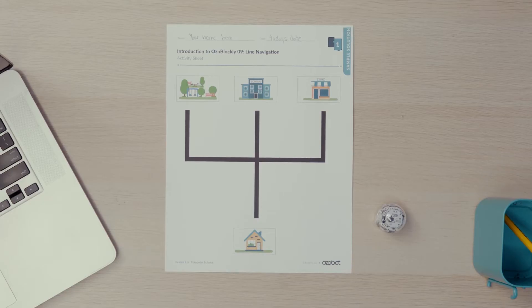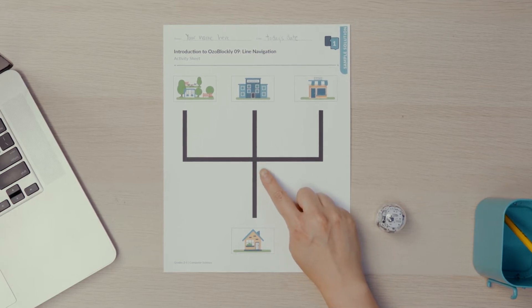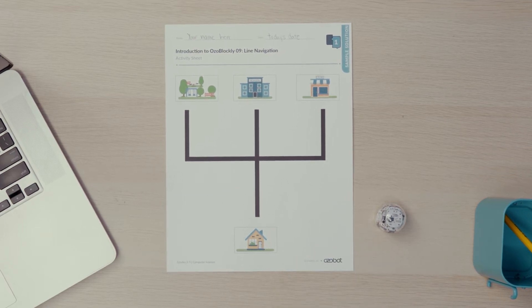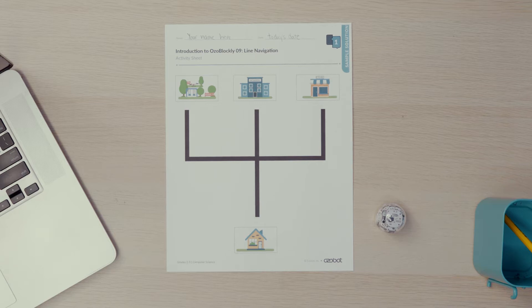Now look at your activity sheet. There are two lines that come together in the middle to make an intersection. The 'follow line to next intersection or line end' block will command the bot to follow a line to move there. The bot could start at the park, the school, the store, or the house. It will move to the intersection and stop. Let's watch my bot test it out.